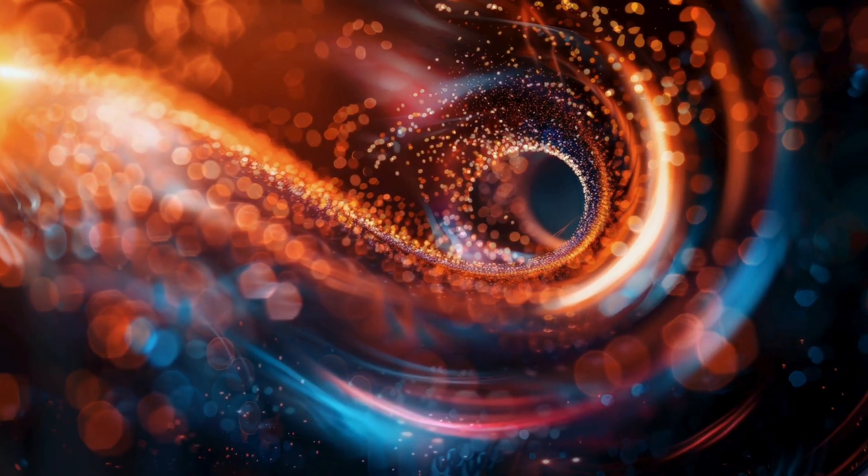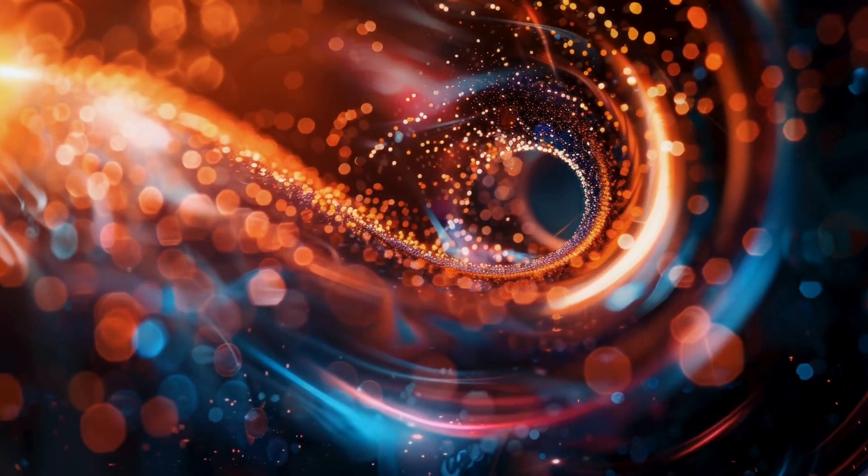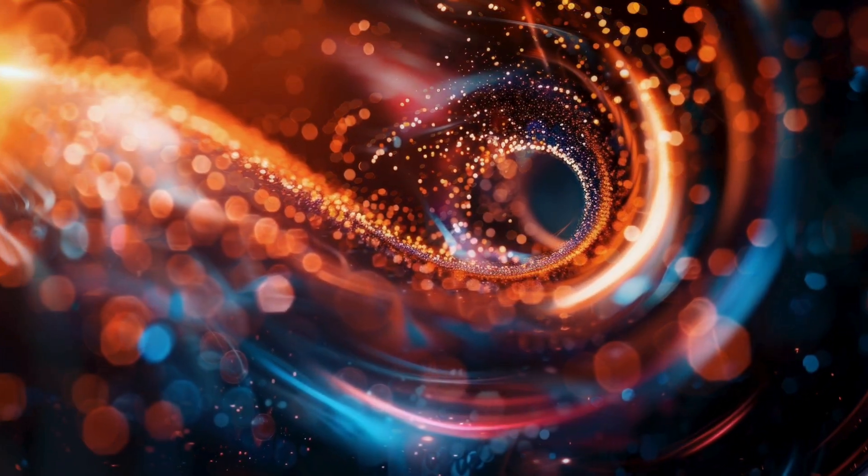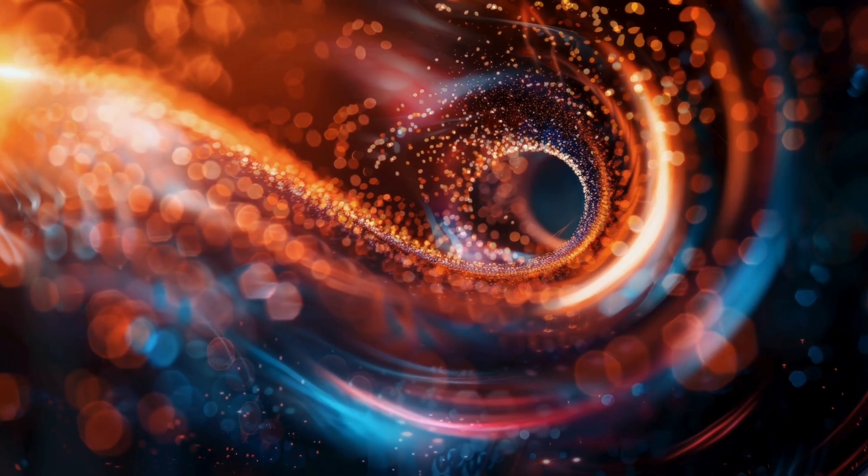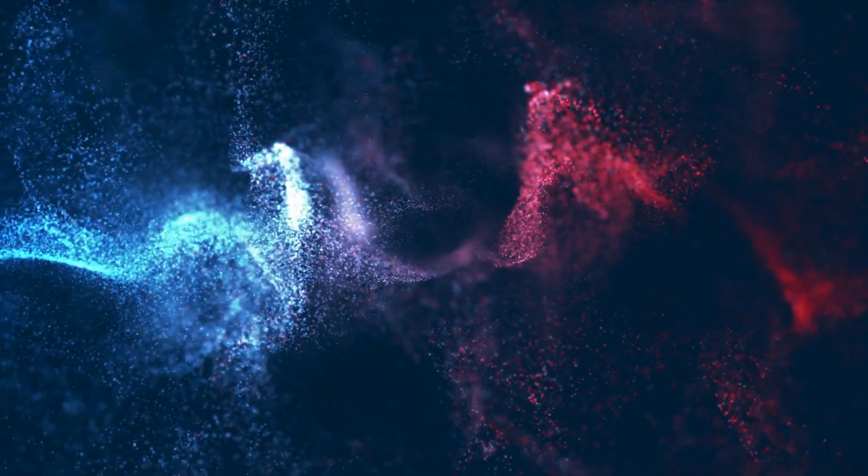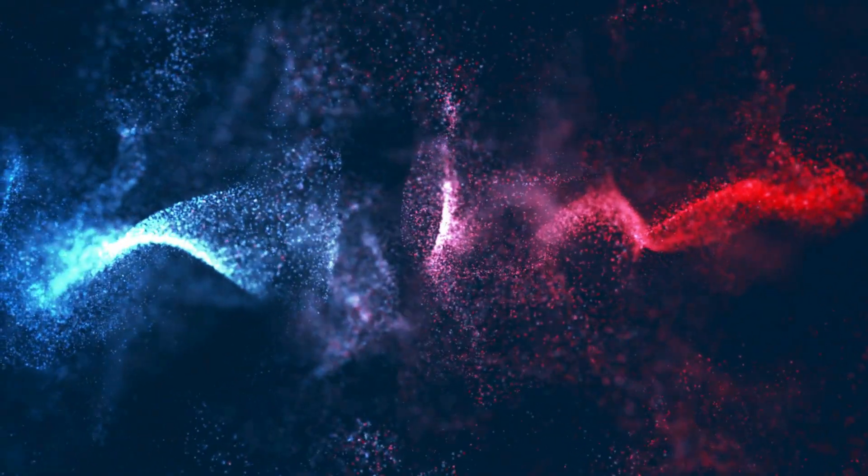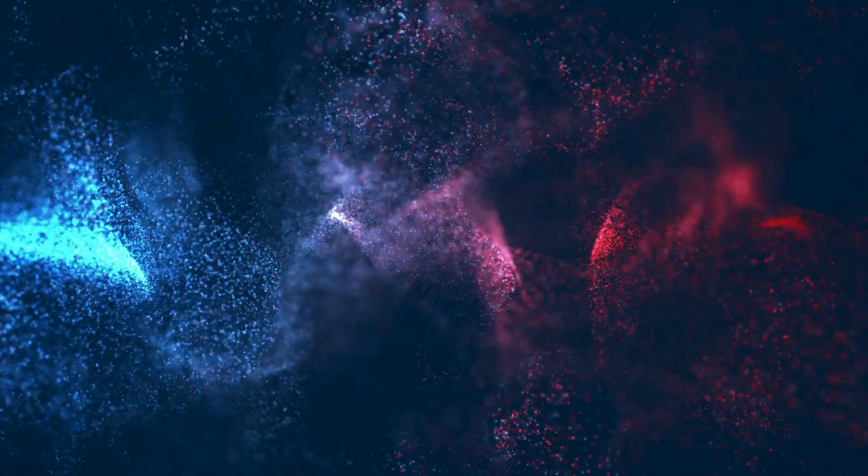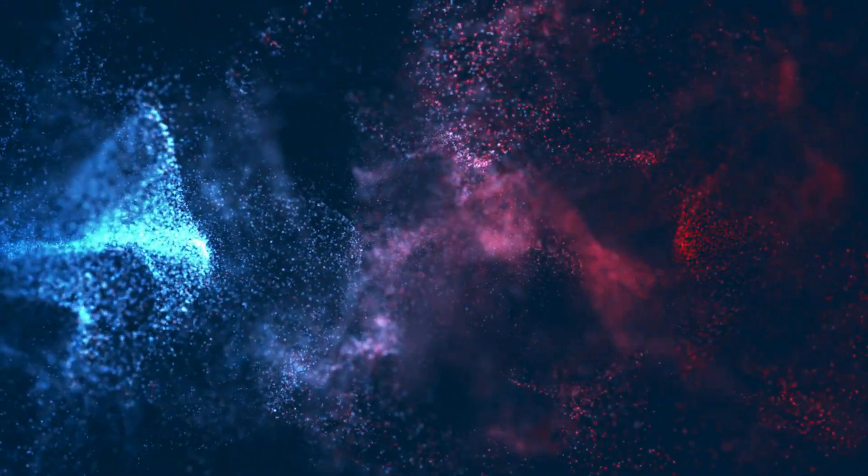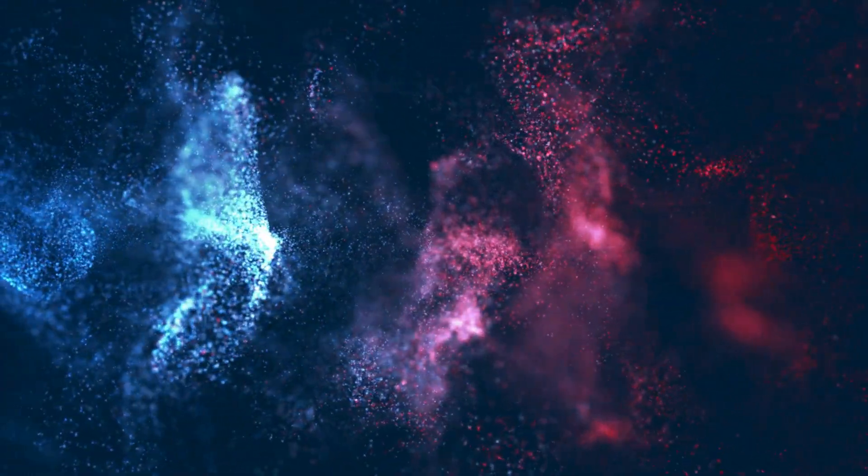But here's where the magic happens. When both slits are open and we don't observe the particles, they create an interference pattern on the detector screen. Multiple bands, like ripples in a pond where waves overlap. This pattern suggests that each particle behaves like a wave, going through both slits simultaneously, and interfering with itself.